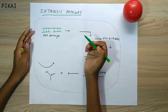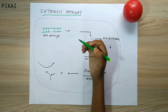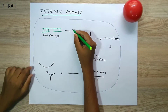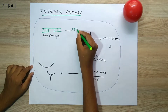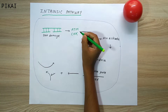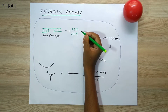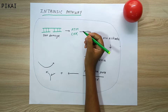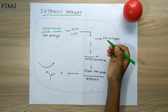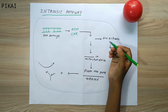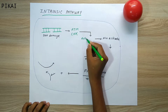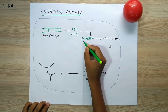This DNA damage is detected by molecules known as ATM and CHK. ATM and CHK check and recognize the DNA damage, and after recognizing it, they activate a protein known as p53. So ATM and CHK cause the activation of the p53 protein.